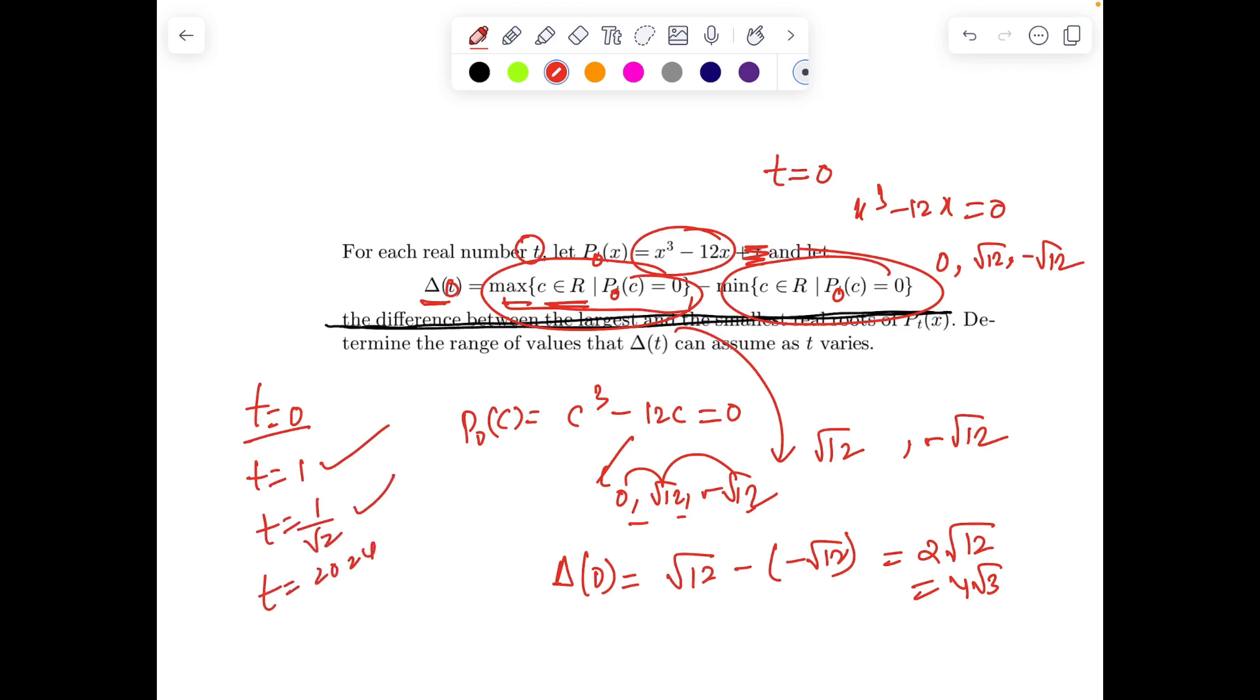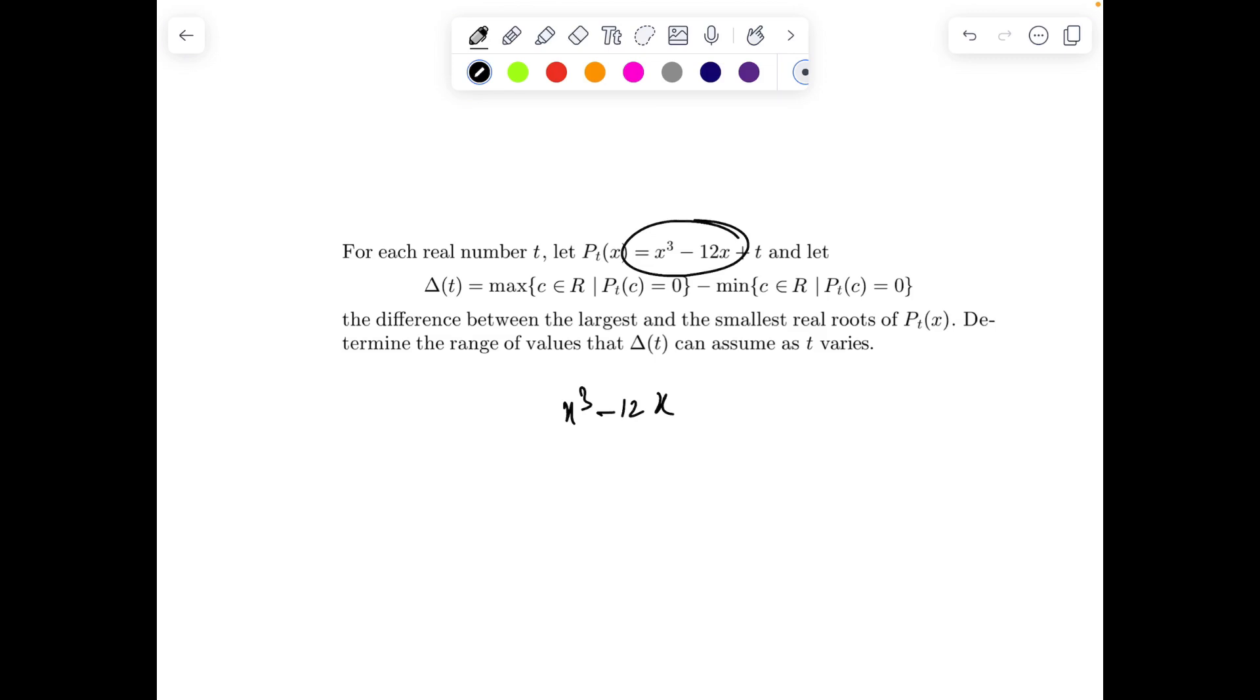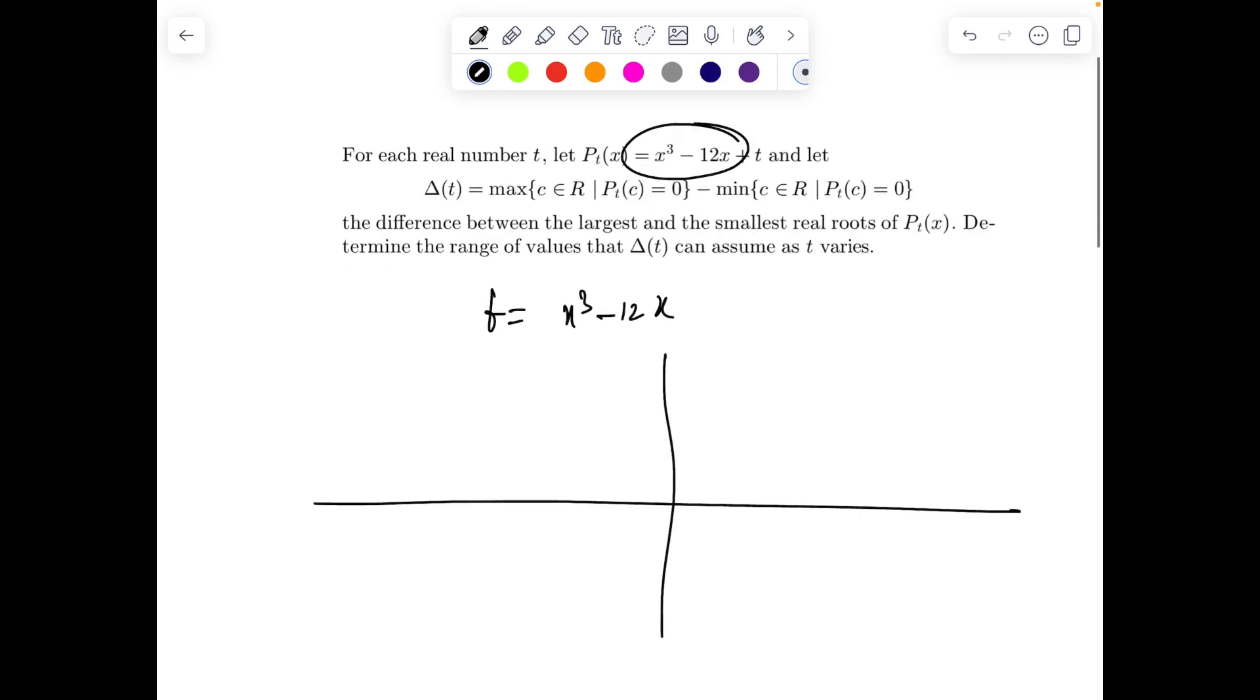In the same way, I can find corresponding to t = 1, t = 1/√2, t = 12 to 24, and so on. It is not fundamentally feasible and possible to check for every value of t.